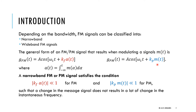We call it a narrowband signal if it satisfies the following condition: if the term that controls the bandwidth is relatively small — specifically if kf times a(t) is very small compared to one, or if kp times m(t) is very small compared to one. If these are small, the change in frequency will be limited and we call them narrowband.